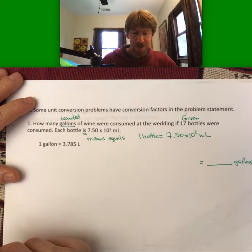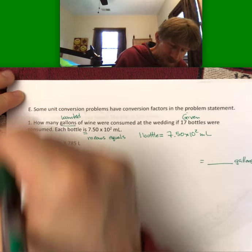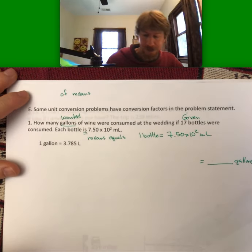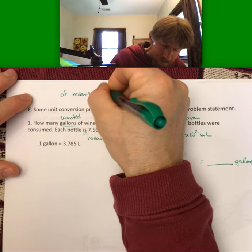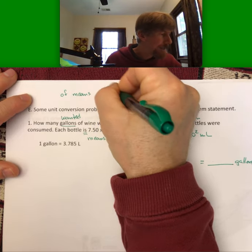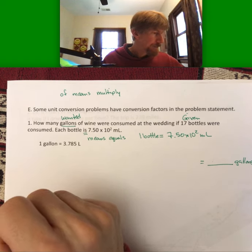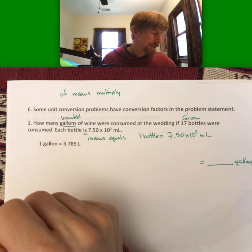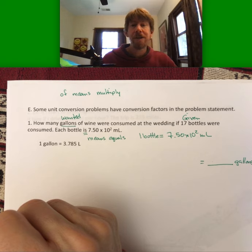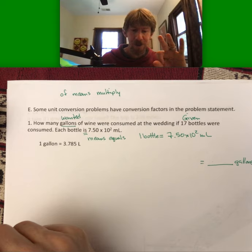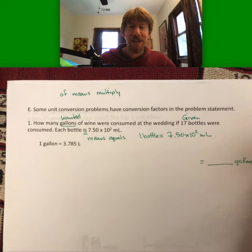Write these vocabulary notes: 'of' typically means multiply, and 'per' means divide by. Reading problems aloud helps translate English into math. Now we have three key English words to help set up our calculations.